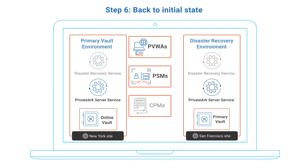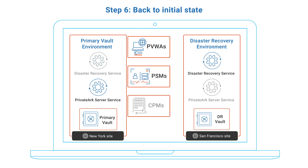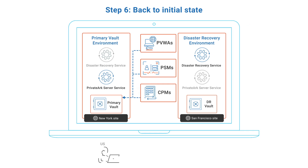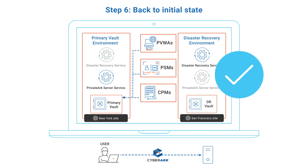In the final step of the exercise, we will set the vault in San Francisco back to DR mode. The PVWAs and PSMs will automatically fail back to the New York vault. The CPM should also resume the connection to the vault in New York once it is back online. After confirming that our end users are still able to connect to critical systems via CyberArk, the exercise is complete, with New York acting once again as the primary site and San Francisco as the DR site.